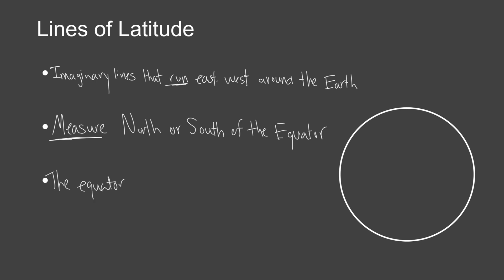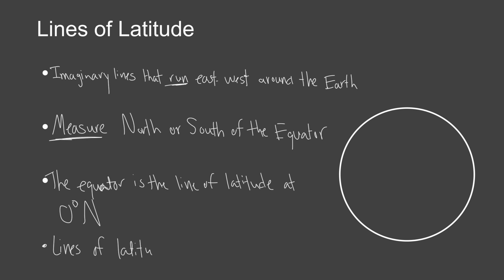The equator is the line of latitude at 0 degrees — it's not north, it's not south, it's exactly in the middle of the Earth. Lines of latitude are also called parallels.